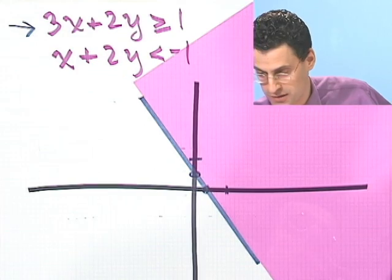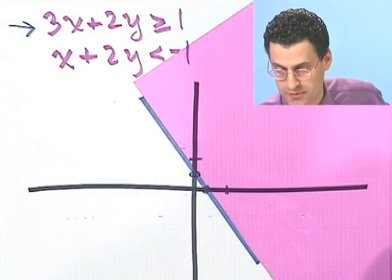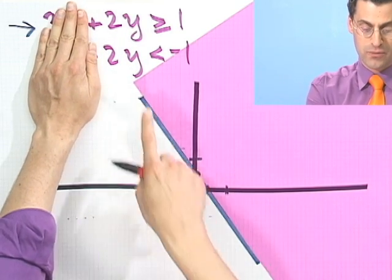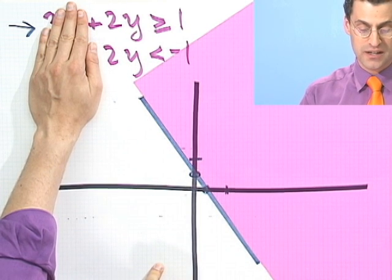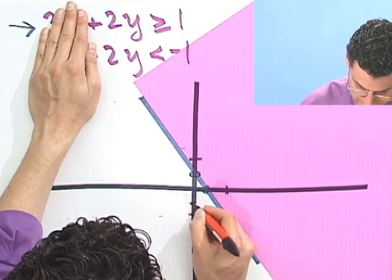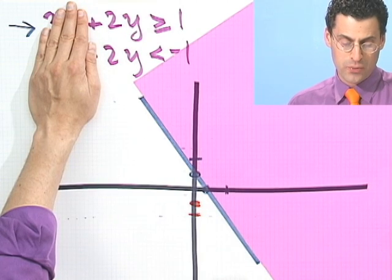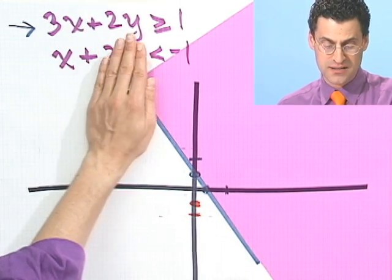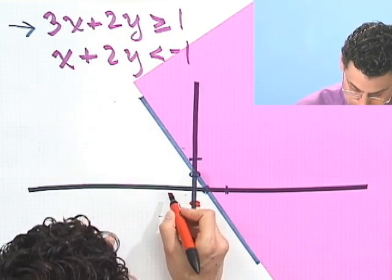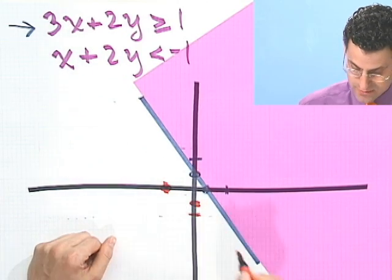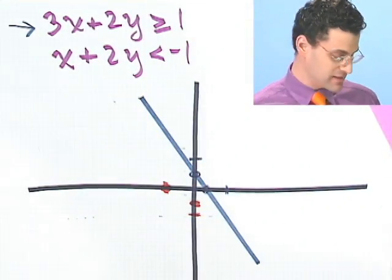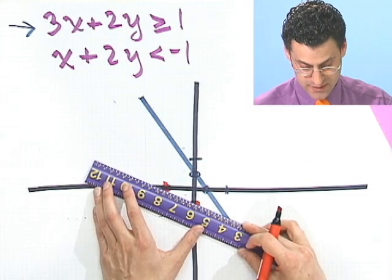The next graph is also a line — I'll use a different color. If x equals zero, y equals negative one half. If y equals zero, x equals negative one. So I connect those two intercept points. Now be careful — there's strict inequality here, which means I have a dotted line. I'm not allowed to include that boundary since it's strict inequality.